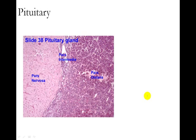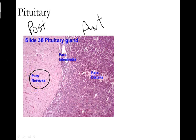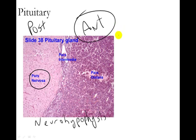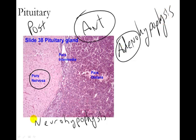The pituitary gland has two distinct sections: the posterior and the anterior. The posterior pituitary gland is really extensions of axons from the hypothalamus, which is why it's also called the pars nervosa or the neurohypophysis. The anterior pituitary gland is mostly glandular tissue that produces and secretes its own hormones, and it's called the adenohypophysis — adeno for gland, neuro for neurons. This is where you'll find growth hormone, thyroid stimulating hormone, and gonadotropin hormones like FSH and LH.